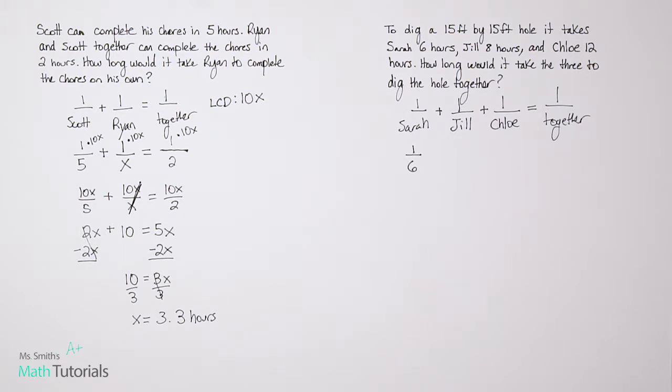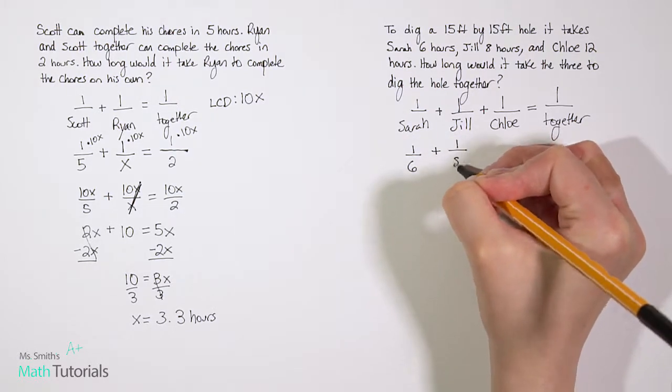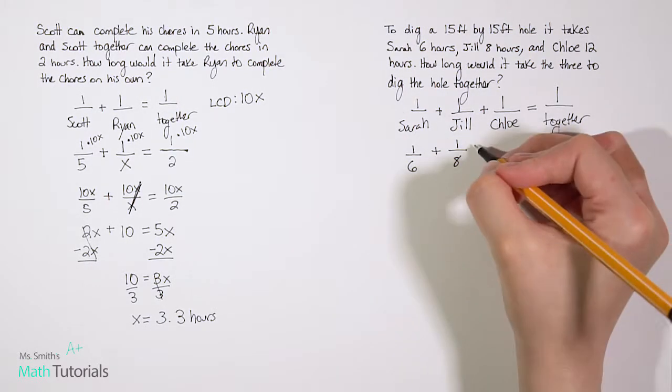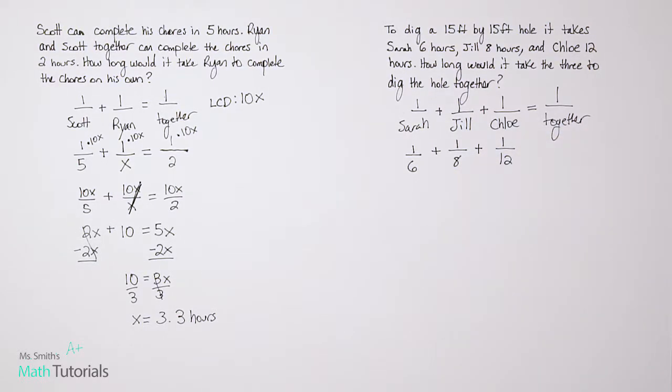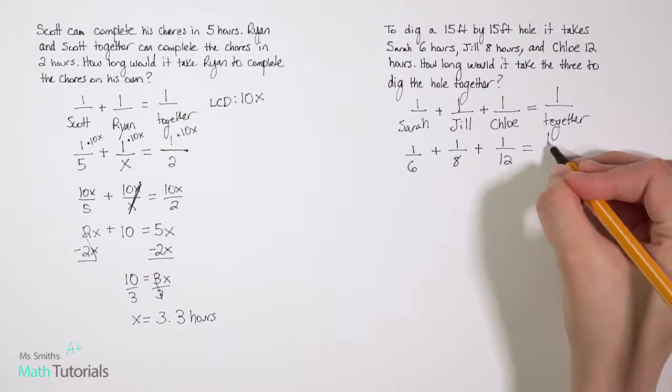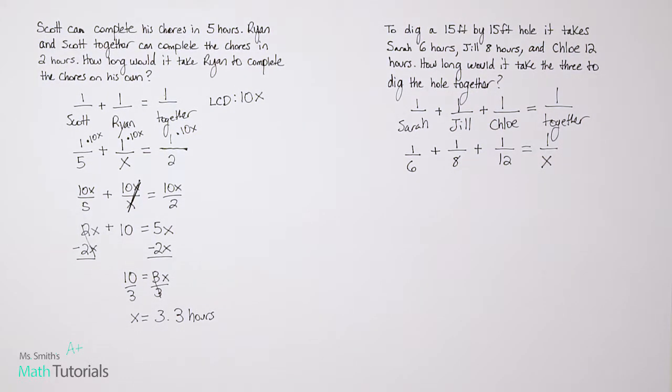So let's fill in what we know for each person. We know it would take Sarah six hours. We know it would take Jill eight hours. We know it would take Chloe 12 hours. And we want to know how long it would take them all together. So together is our x in this particular problem. Let's figure out what our LCD is: six, eight, 12, and x.